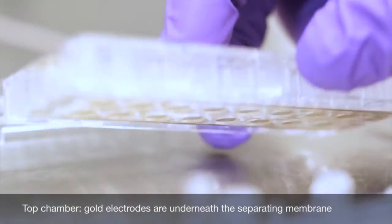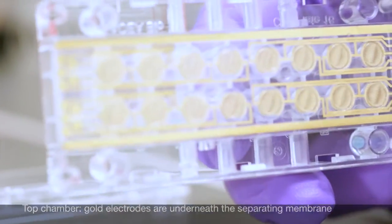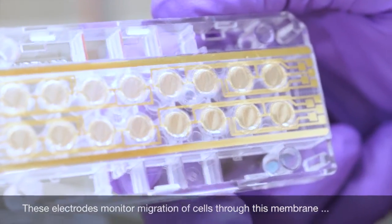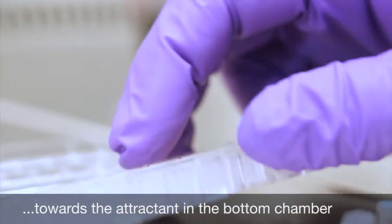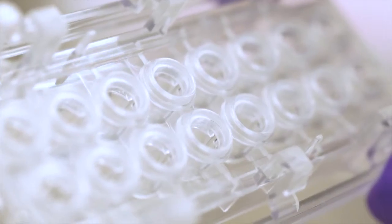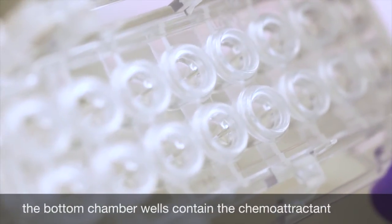The top chamber is equipped with gold electrodes right below a separating membrane to measure the impedance. Migration of cells through the membrane is measured by changes in impedance values. Migration is triggered by the chemoattractant in the bottom chamber.